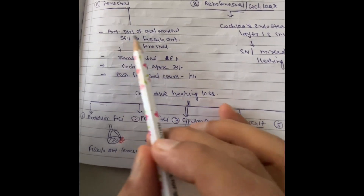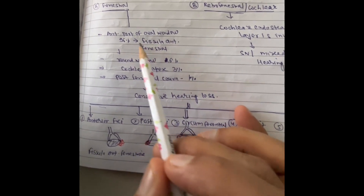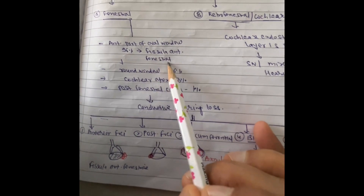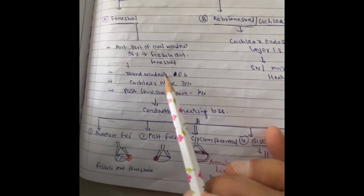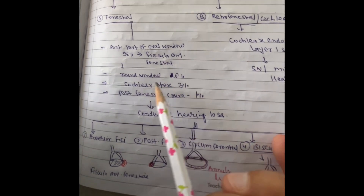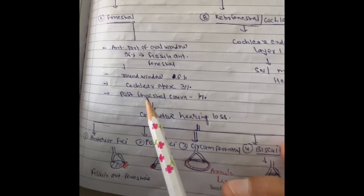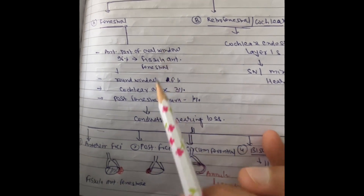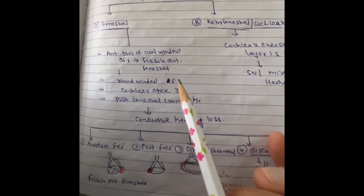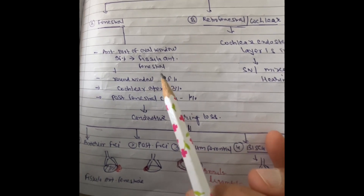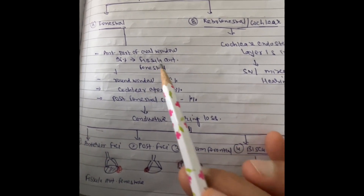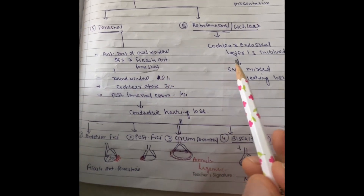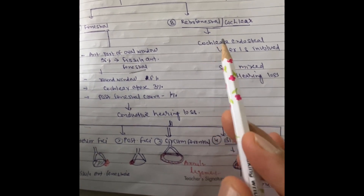In the fenestral type, the anterior part of the oval window — 96 percent of cases — is the most common location. This anterior crural region of the footplate is called the 'fissula ante fenestram.' The second most common site is the round window, about 6 percent of cases; cochlear apex may be involved in 3 percent; and posterior crural region in about 1 percent. The most common site — the fissula ante fenestram — is an important MCQ point.